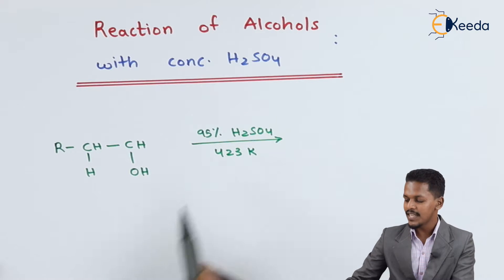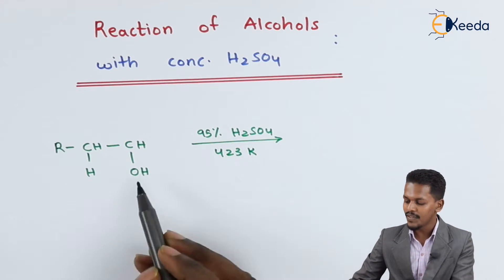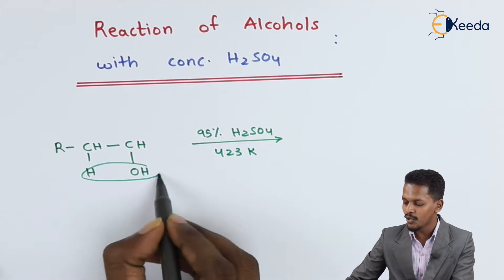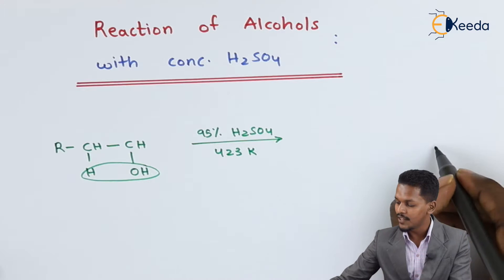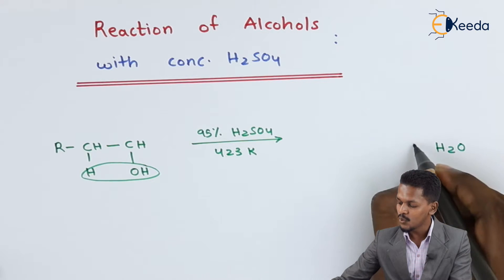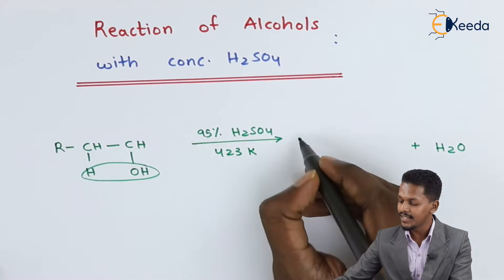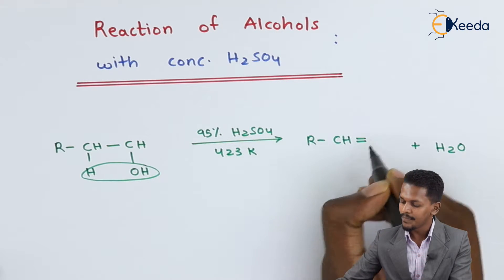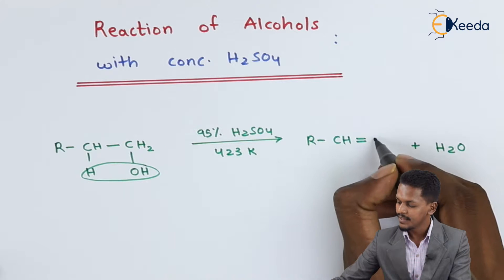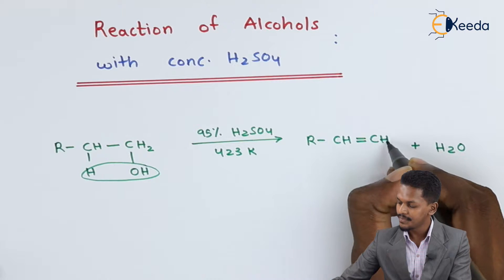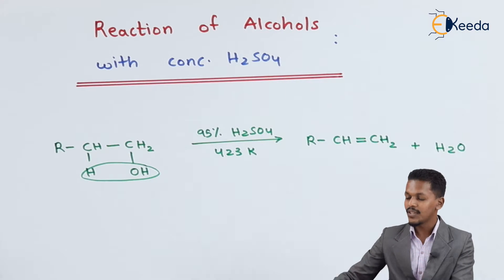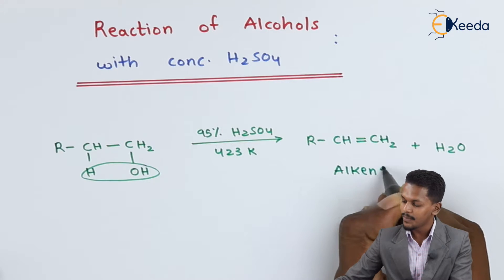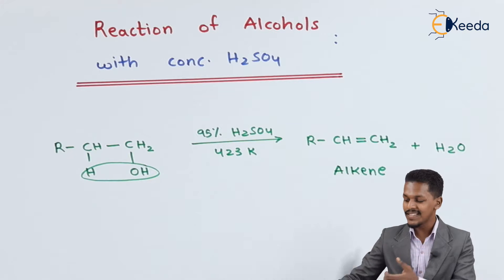Since H2SO4 is known as a dehydrating agent, it will remove the water molecule from this alcohol. The H2O molecule will be removed in the form of H2O, and that is how we obtain RCH=CH2, which is nothing but an alkene obtained from an alcohol.